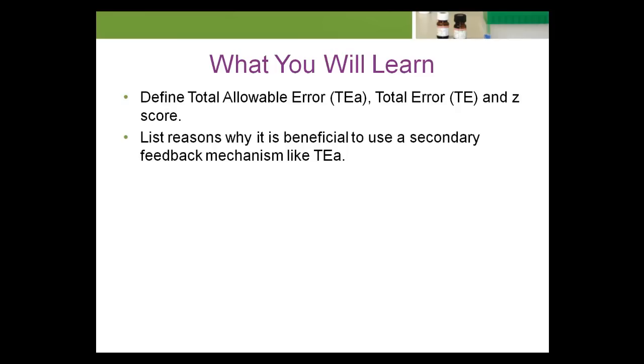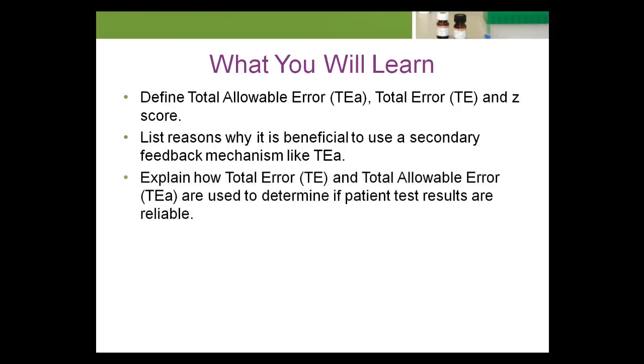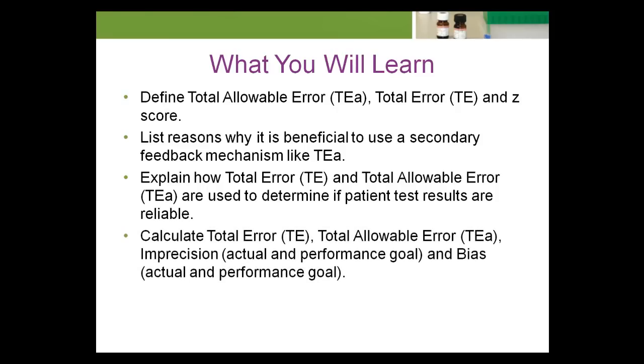List reasons why it's beneficial to use a secondary feedback mechanism like TEA. Explain how total error and total allowable error are used to determine if patient test results are reliable. Calculate total error, total allowable error, imprecision actual and performance goal, and bias actual and performance goal.